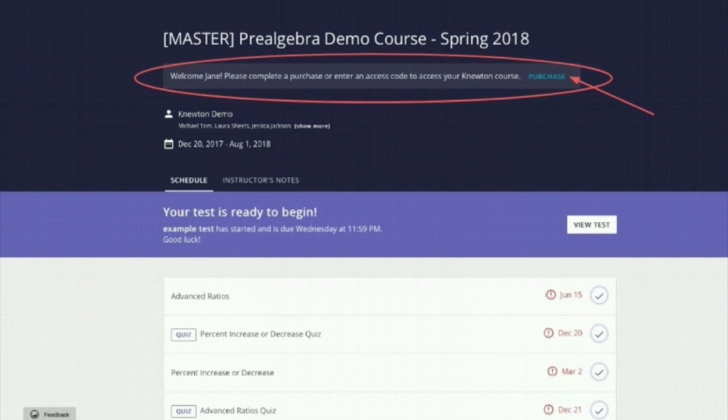You can do this either online or in your bookstore. If you purchase in the bookstore, you will be provided with an access code that you can enter when in your account.